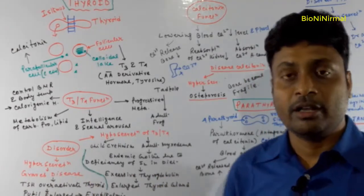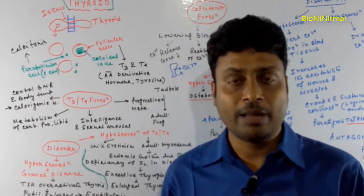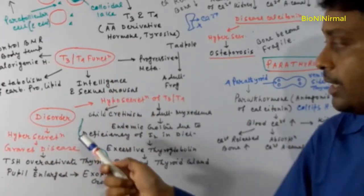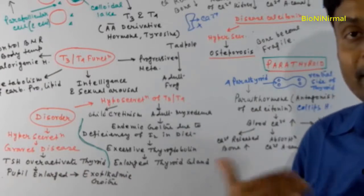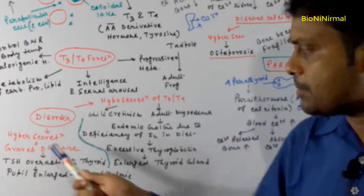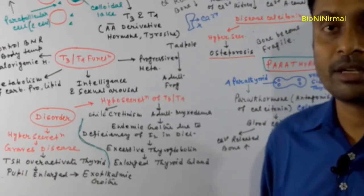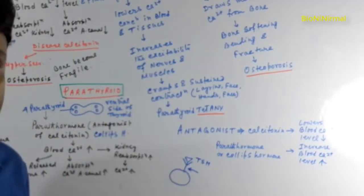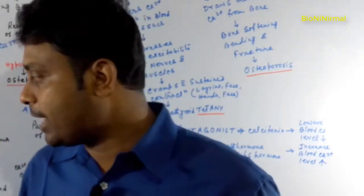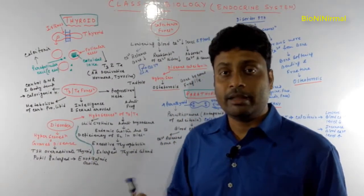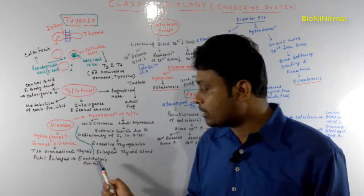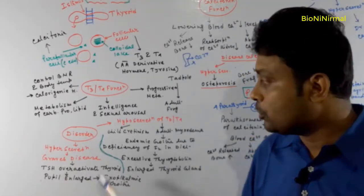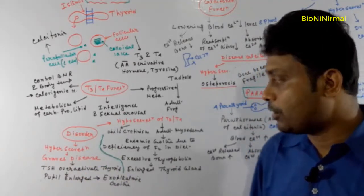For any endocrine disorder, we look at hyposecretion and hypersecretion. If hypersecretion occurs in the thyroid gland, the thyroxine level will be very high, and this is called Graves' disease. Graves' disease is an autoimmune disease that occurs due to oversecretion of thyroid stimulating hormone. The excess TSH combines with TSH receptors and overactivates the thyroid gland, raising thyroxine levels very high. This causes a condition called exophthalmic goiter, which involves enlargement of the pupils of the eye.